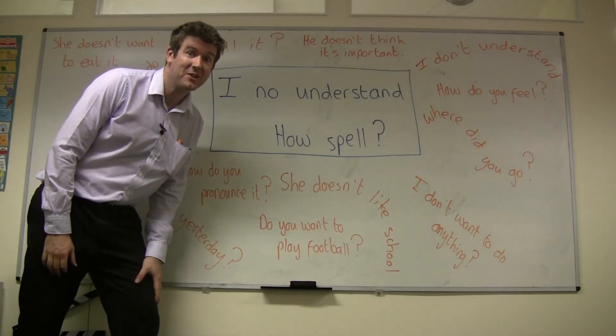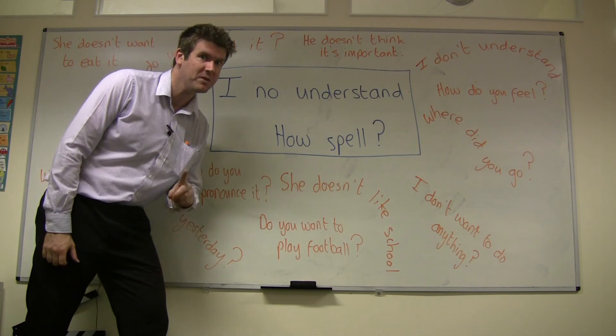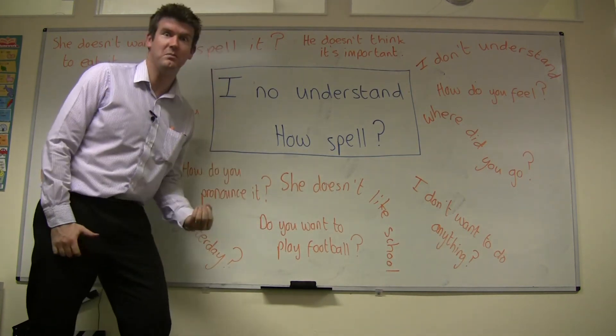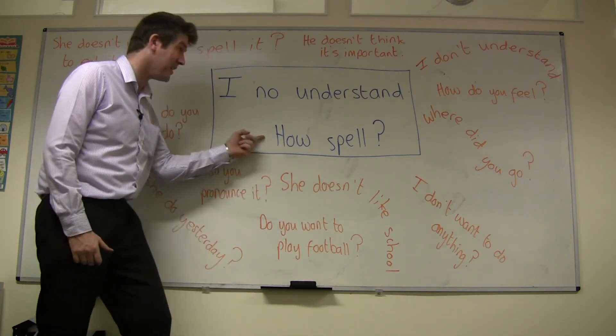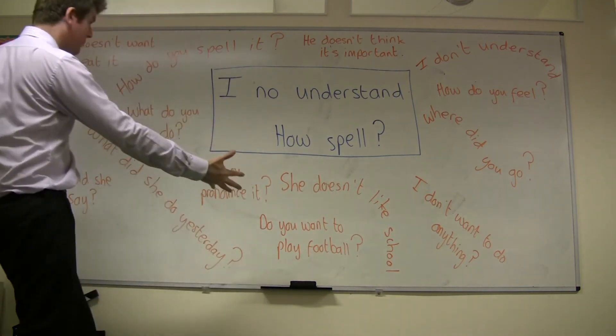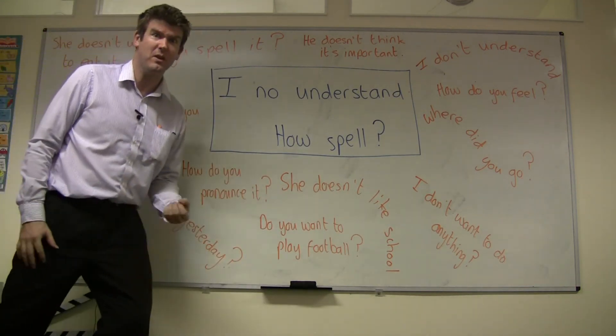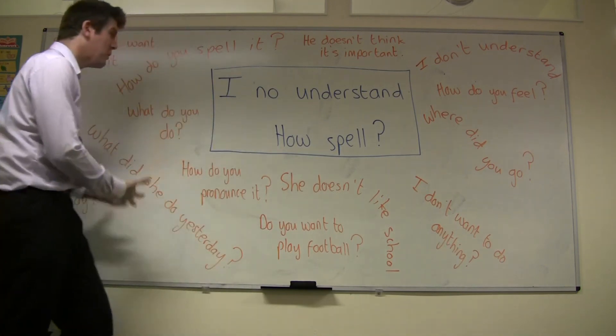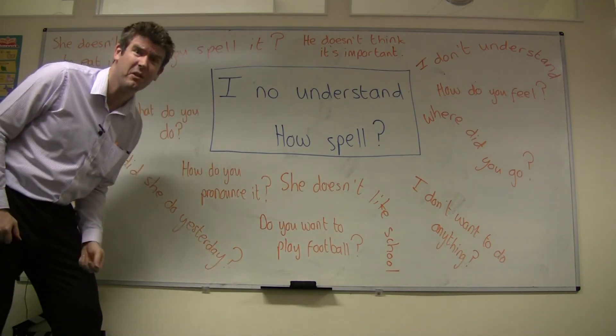So next time you're speaking English, think carefully before you say this. It should be 'I don't understand.' And here, 'how do you spell it?' Look at all the different sentences that you can use with auxiliary verbs. There are so many and they're very easy to practice.